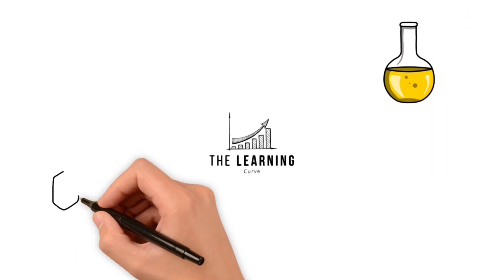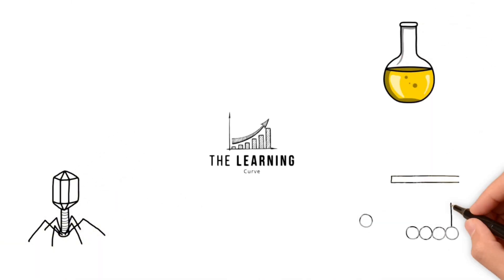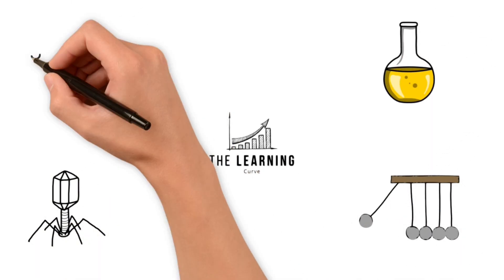Balancing chemical equations is one of the most important skills in chemistry and today you're going to learn how to do it the right way, step by step.